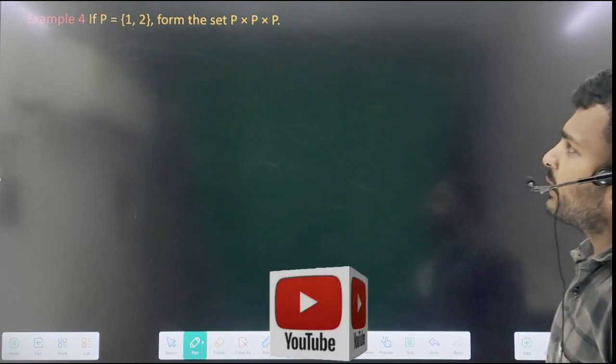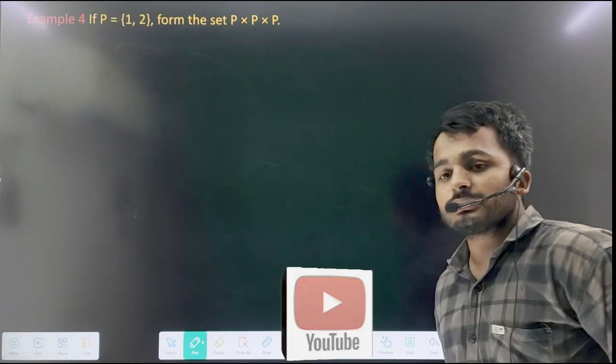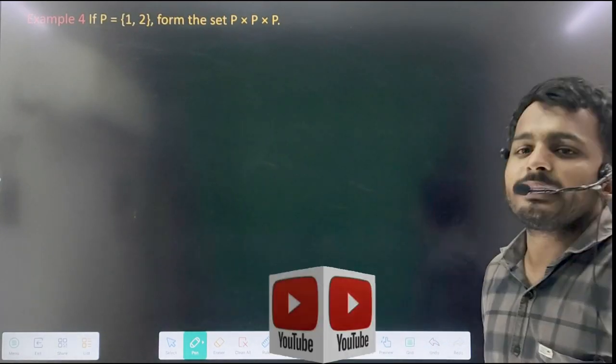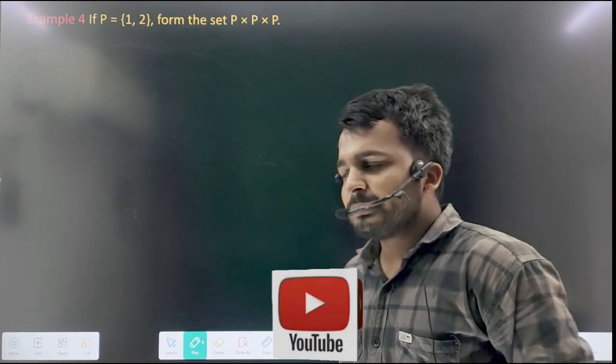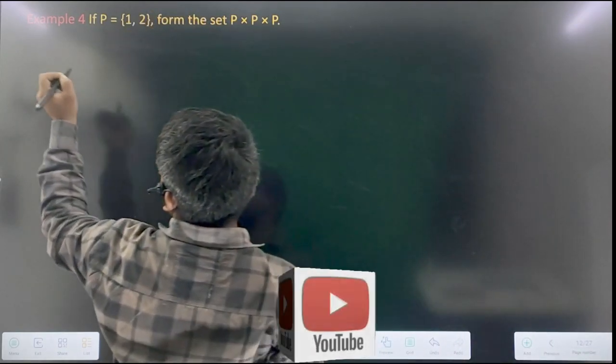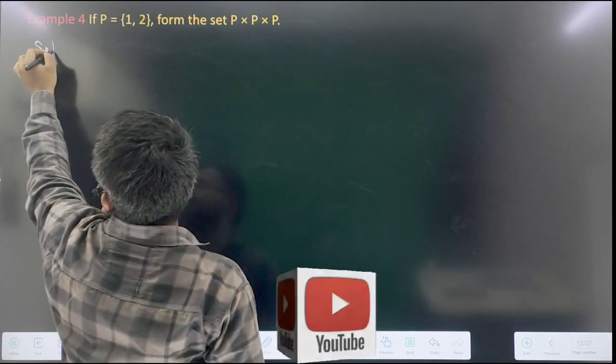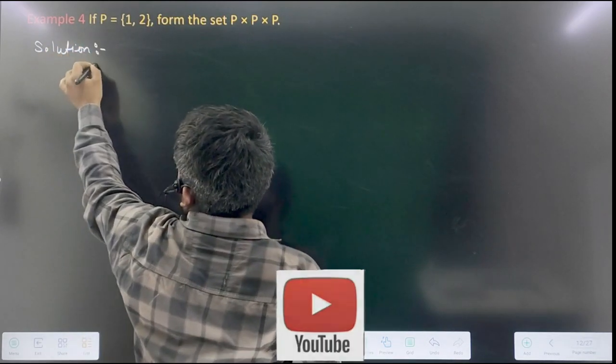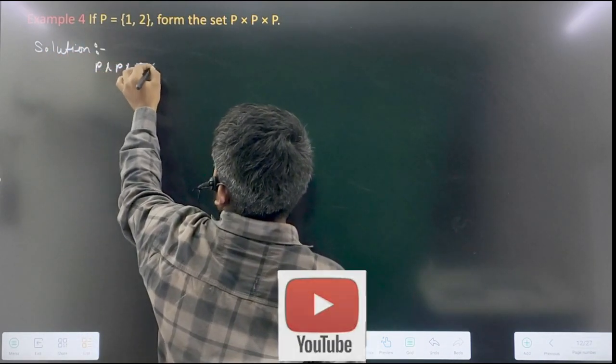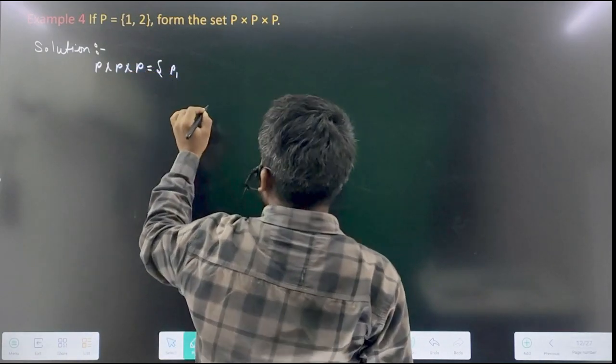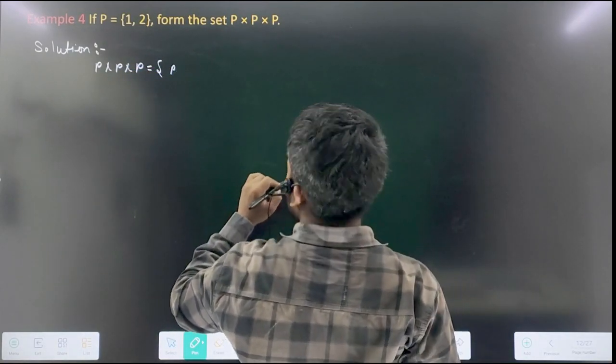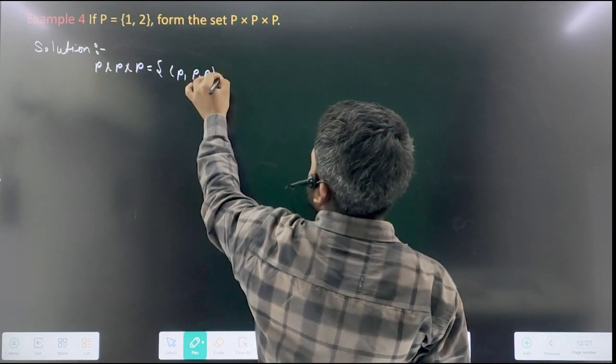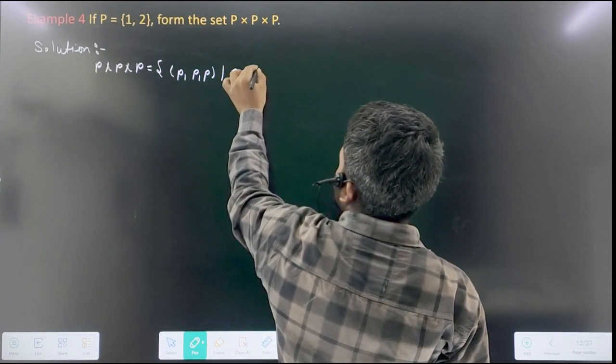See that P is equal to {1, 2}, so form the set of P × P × P. What about P × P × P? Triplets are coming in it, okay? So you can see that P × P × P, small p, small p, such that p belonging to P.